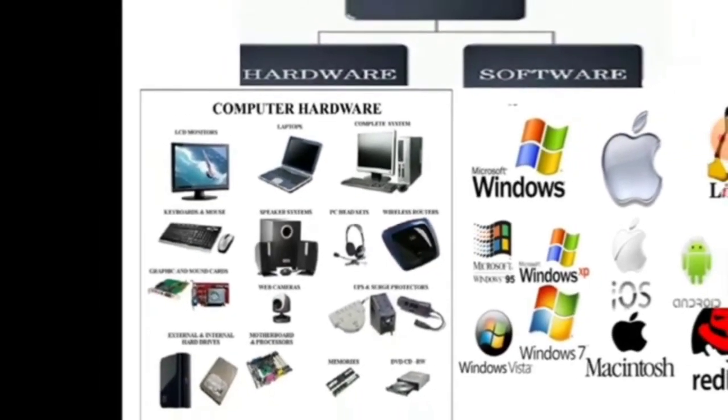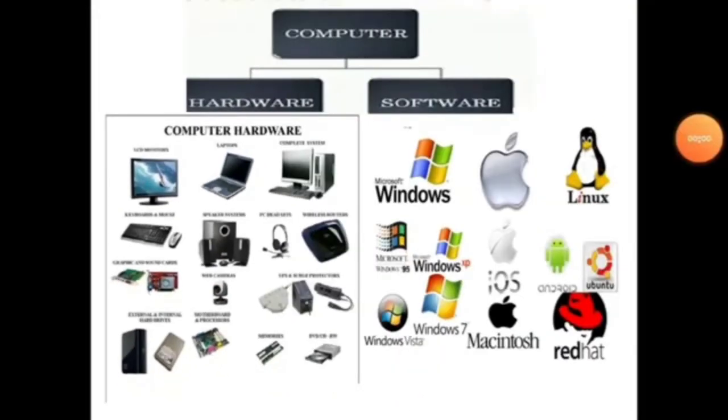Now software. Those parts of computer which we can't see or touch are called software. As you can see on the screen, examples are given here: Windows, iOS, Linux, Windows XP, Android, etc. All these are software. We cannot touch it, we cannot even see it. Let's move forward.